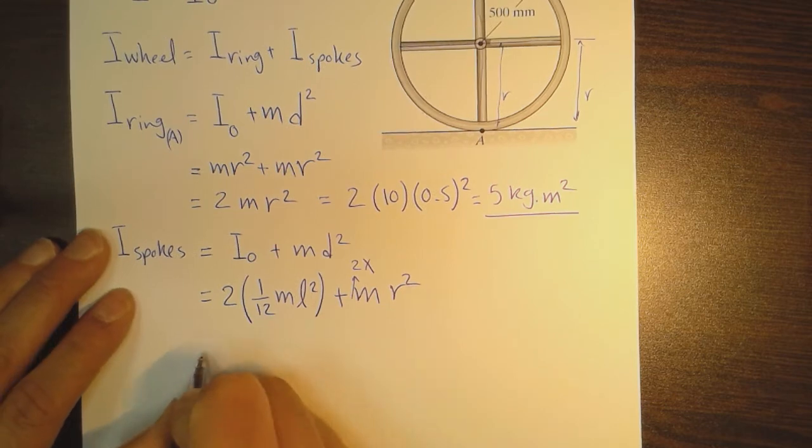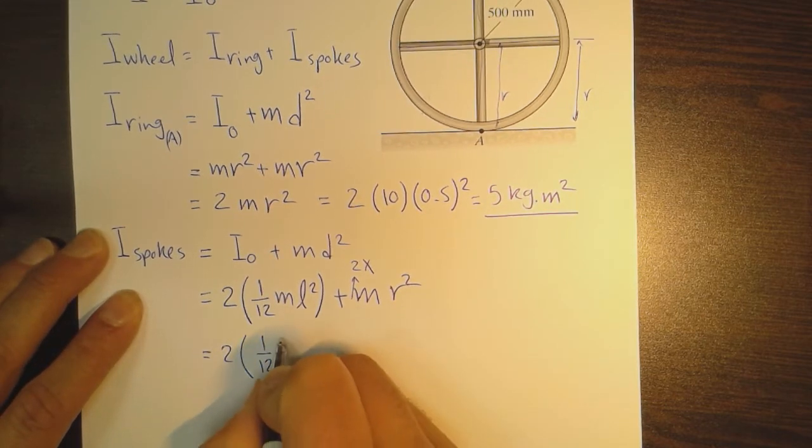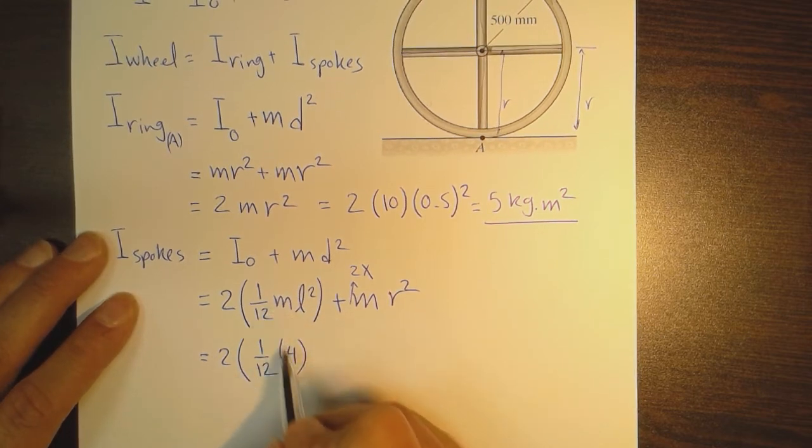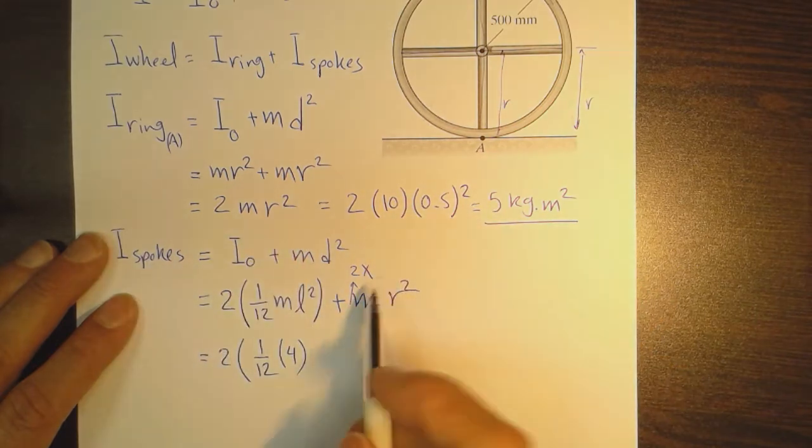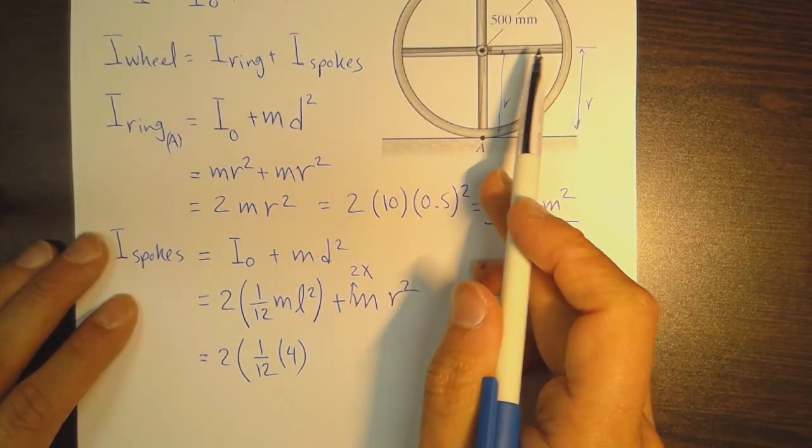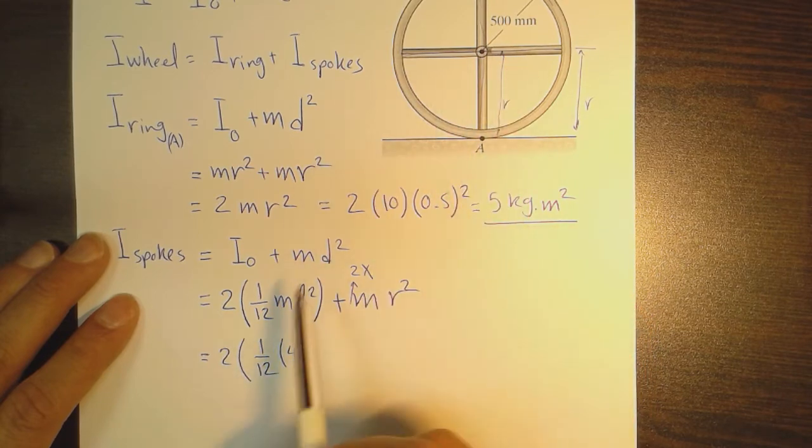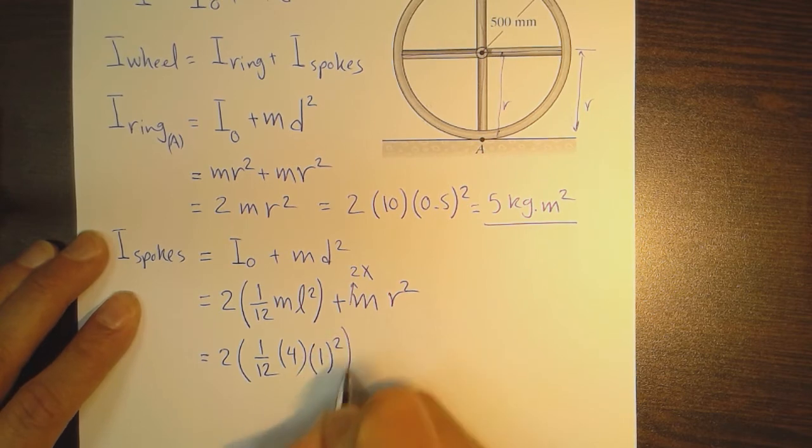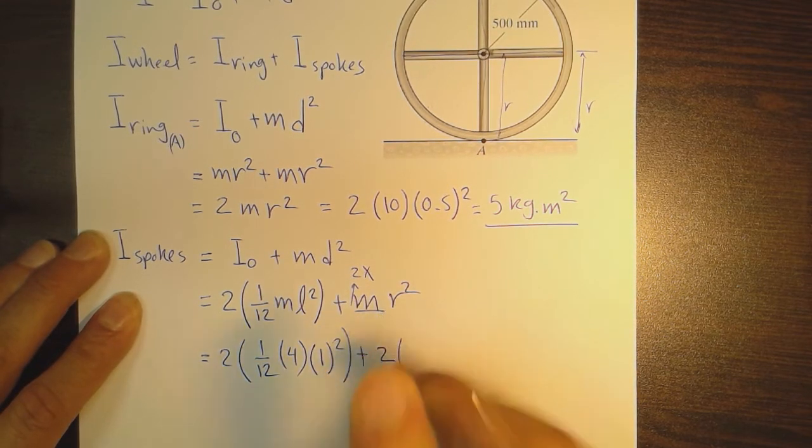We can write this down: 2 × (1/12) × mass × length². The mass of each rod is four kilograms because each spoke is two kilograms, so 2 times 2 is 4. The length is one meter.